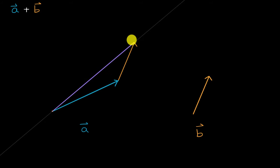So it would look something like that. And we can call this vector C. So we could say A plus B is equal to vector C.